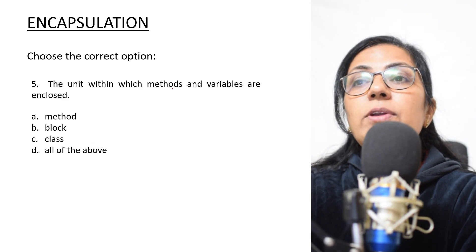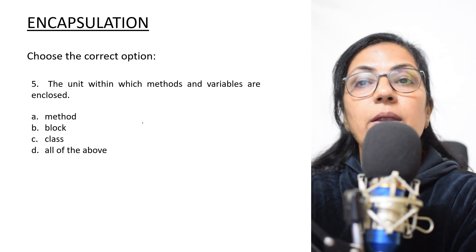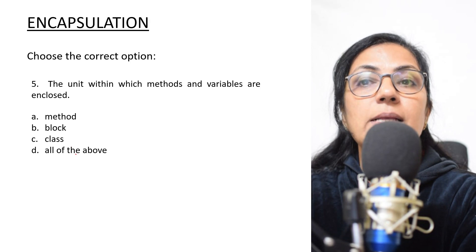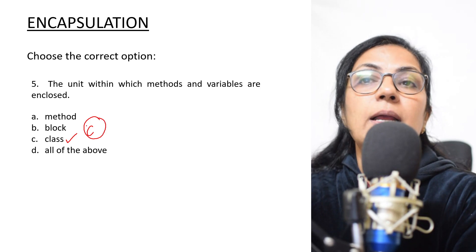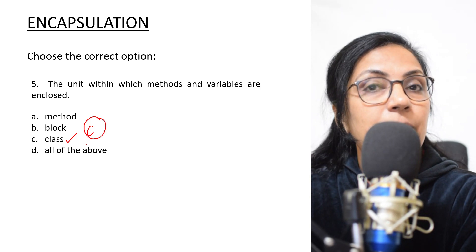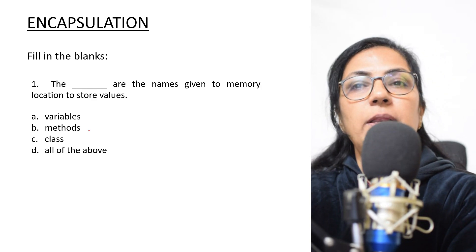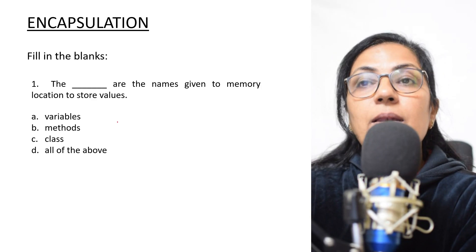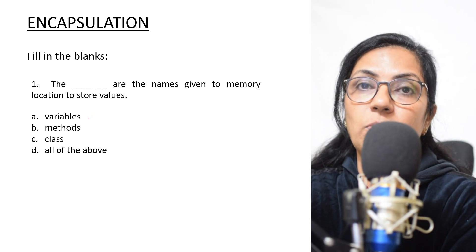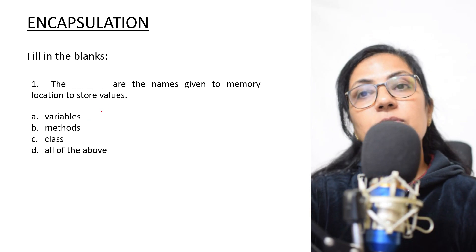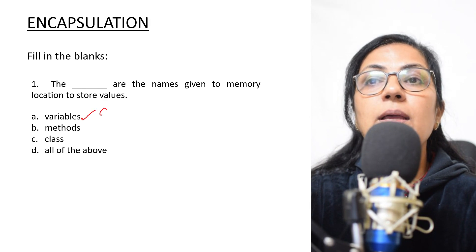Next question: 'The unit within which methods and variables are enclosed' — in method, block, or class, or all of the above? The correct answer is option C. A class is a collection of methods and variables. Now we move to fill in the blanks. 'The dash are the names given to memory locations to store values.' The correct answer is variables — variables are named memory locations.